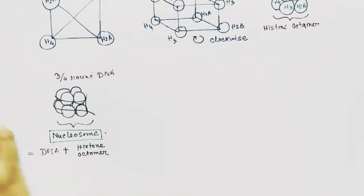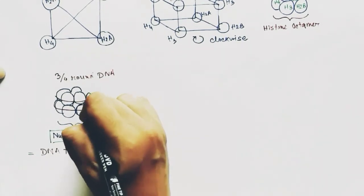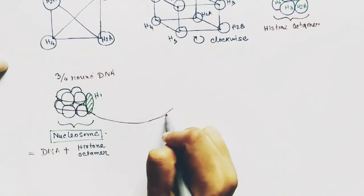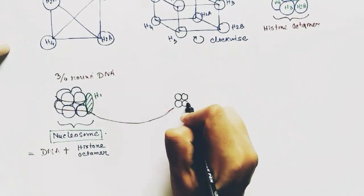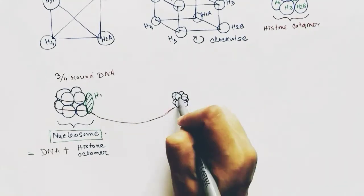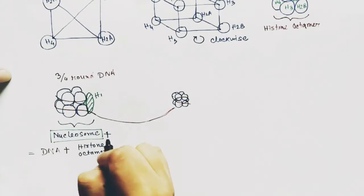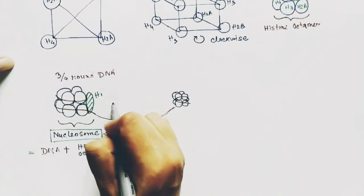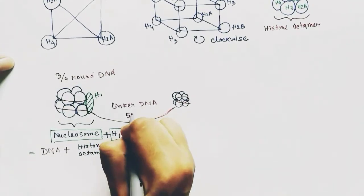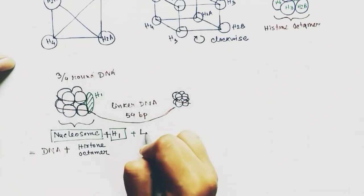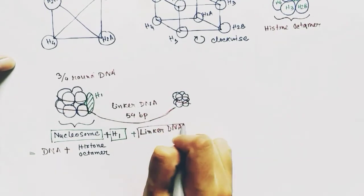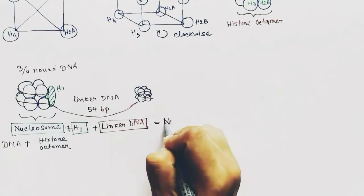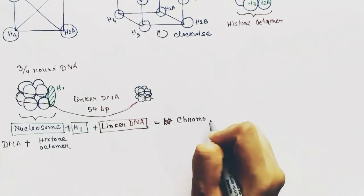The H1 histone protein clips the DNA to the histone octamer. There are lot more histone octamers present. The DNA which links two octamers is called the linker DNA, which is made up of 54 base pairs. All of them together—nucleosome, H1, and linker DNA—are called chromatosome.